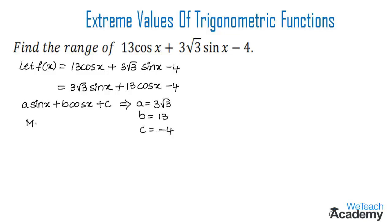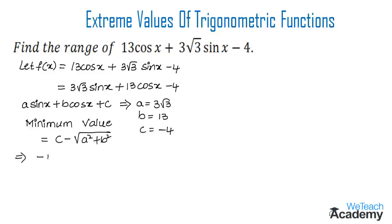We already know the formula to find the minimum value of a trigonometric function. The minimum value is given by c minus √(a² + b²). Substituting all the values of a, b, c: we get -4 minus √((3√3)² + 13²).